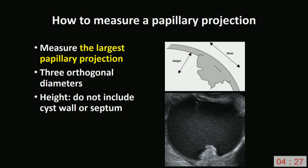To measure a papillary projection, always measure the largest papillary projection using three orthogonal diameters. When measuring the height of the papillary projection, do not include the thickness of the wall or the septum from which the papillary projection arises in your measurement.